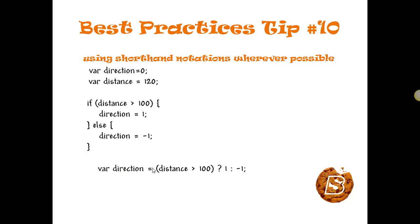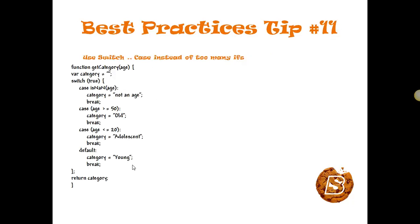Best practices tip number ten: make use of shorthand notations wherever possible. For example, we have a variable 'direction' and a variable 'distance'. If distance is greater than 100, direction should be 1, otherwise minus 1. We can write this in one line using a ternary operator: direction = distance > 100 ? 1 : -1. Since distance is 120, direction will be 1.